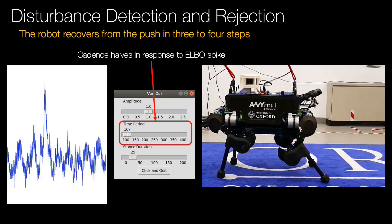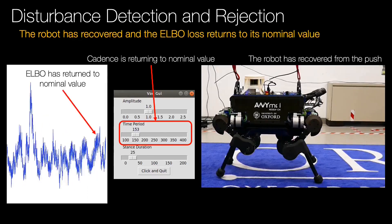The swing duration is still reducing to a recovery value of 125 milliseconds. Now the robot has recovered successfully, and the swing duration is increasing back to 250 milliseconds, its normal value. Similarly, the ELBO loss will return back to normal.